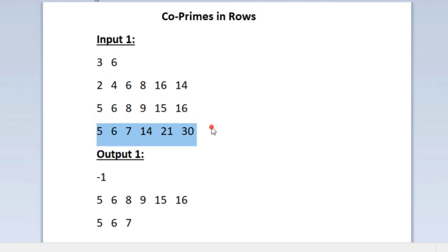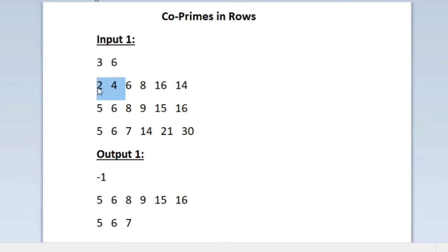There are 3 rows in our sample input 1. For every row we have to find the co-prime integers. Starting with the first row, the first pair is 2 and 4. Two integers are said to be co-prime if their highest common factor is equal to 1. Since 2 and 4 can both be divided by 2, their HCF is not 1, so they are not co-prime. We move to the next pair.